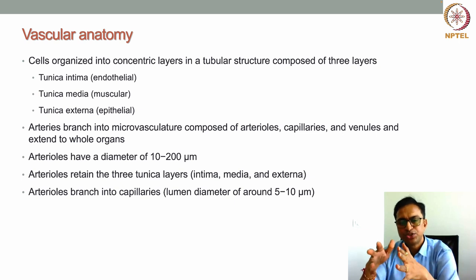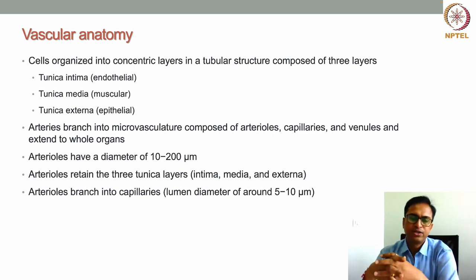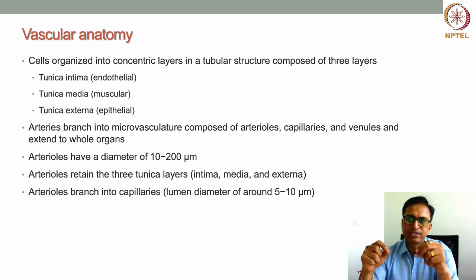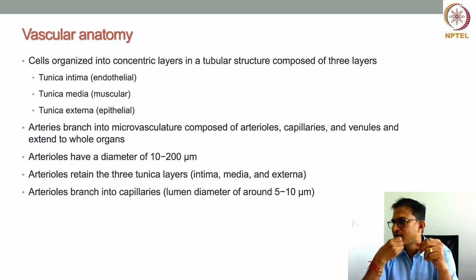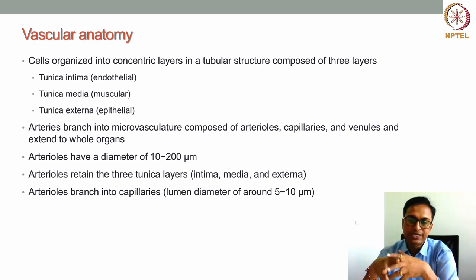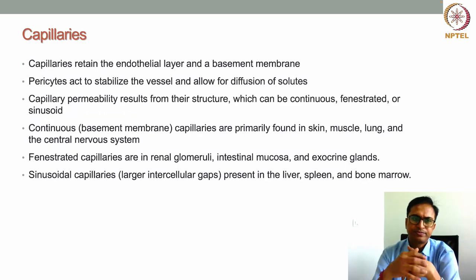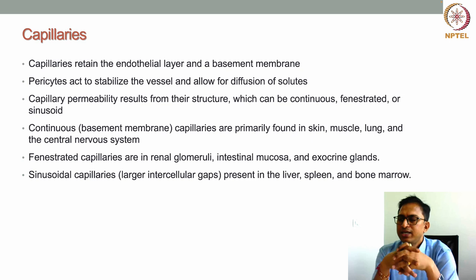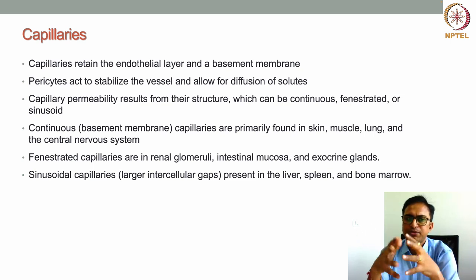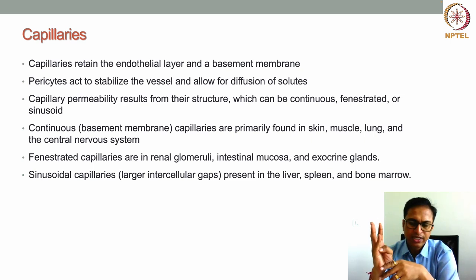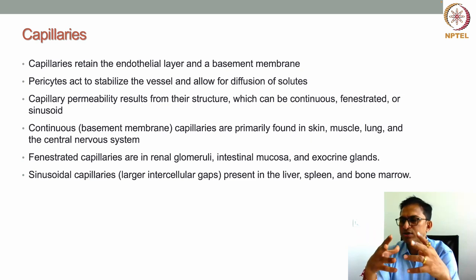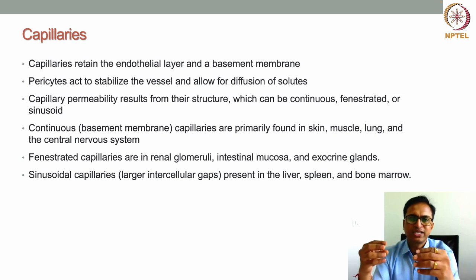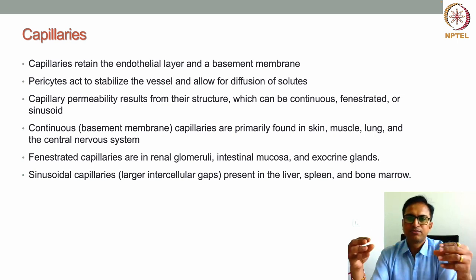Arterioles branch again into capillaries in the tissue or organ bed, where the lumen diameter can be as fine as 5 to 10 microns. Capillaries retain only the endothelial layer and a basement membrane — the tunica media and tunica externa are not present. On top of the basement membrane, pericyte cells are also attached.